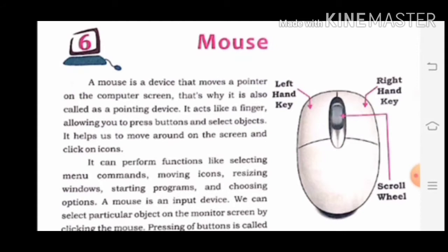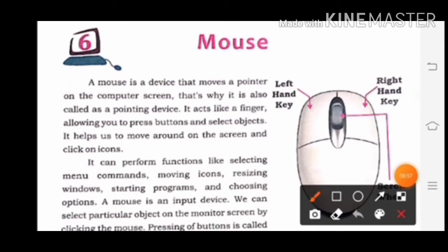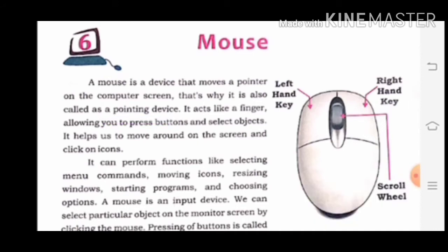Mouse is a pointing device that moves a pointer on the computer screen. Mouse का दूसरा नाम है pointing device. It acts like a finger, allowing you to press buttons and select objects. Mouse हमें बटन को प्रेस करने के लिए और monitor की screen पर जो data, information और objects होते हैं, उन्हें select करने के लिए allow करता है।